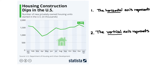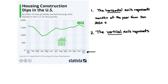Let's interpret what is actually going on and fill in the blank. The horizontal axis represents what? When we look at this line graph, the horizontal axis actually represents months of the year from January 2020 to January 2021.